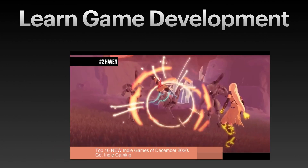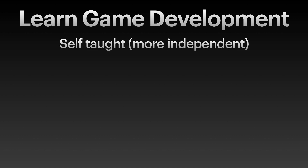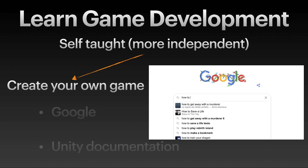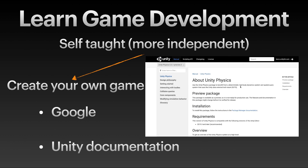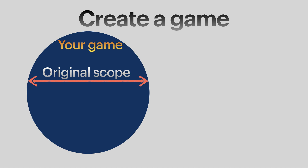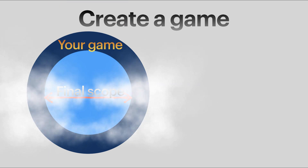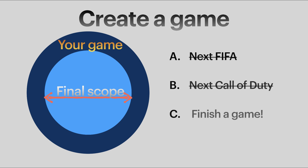Now the most important part: which is the best option for you to start learning game development? For self-taught people who are very independent, I think the best option is to just create your own game. Use Google and the Unity documentation — all the information is there on the internet. The key advice is to keep the scope of your first games really small. Don't try to create the next FIFA or Call of Duty. Keep it small, and most importantly, finish the game.